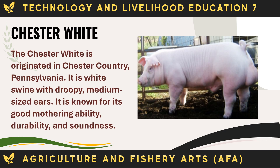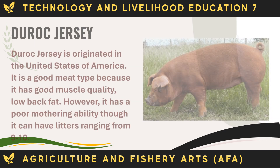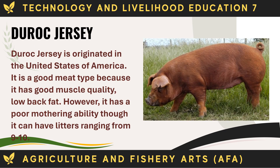The Chester White originated in Chester County, Pennsylvania. It is a white swine with droopy, medium-sized ears, known for its good mothering ability, durability, and soundness. The Duroc Jersey originated in the United States. It is a good meat type because it has good muscle quality and low back fat; however, it has a poor mothering ability, though it can have litters ranging from 9 to 10.